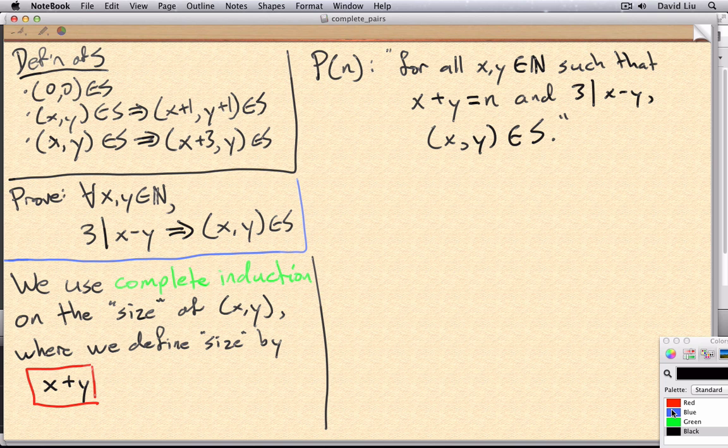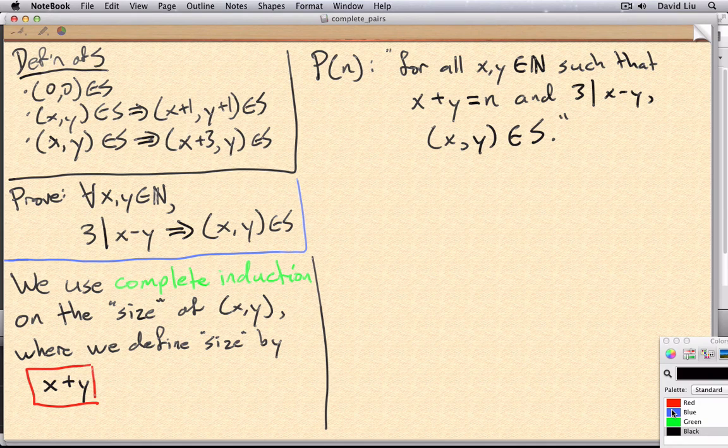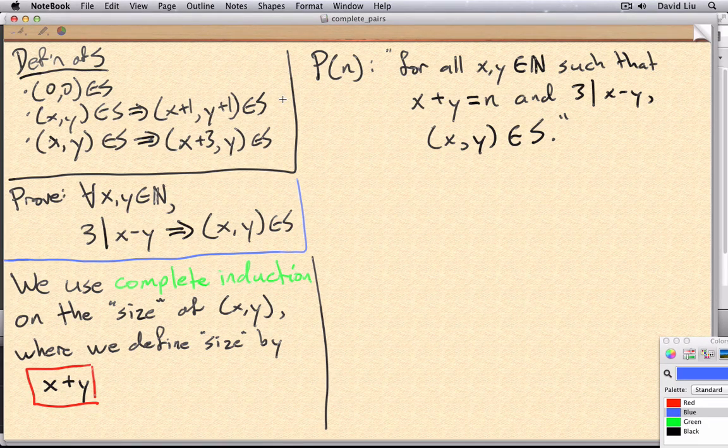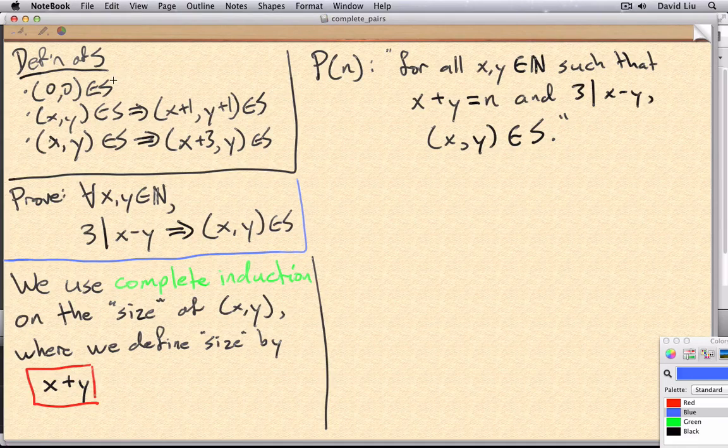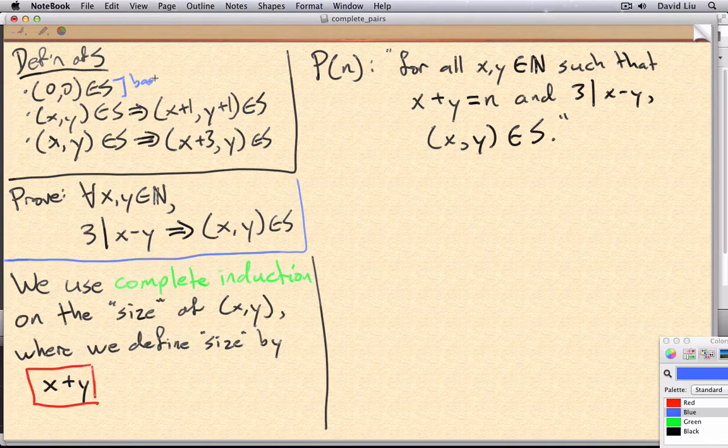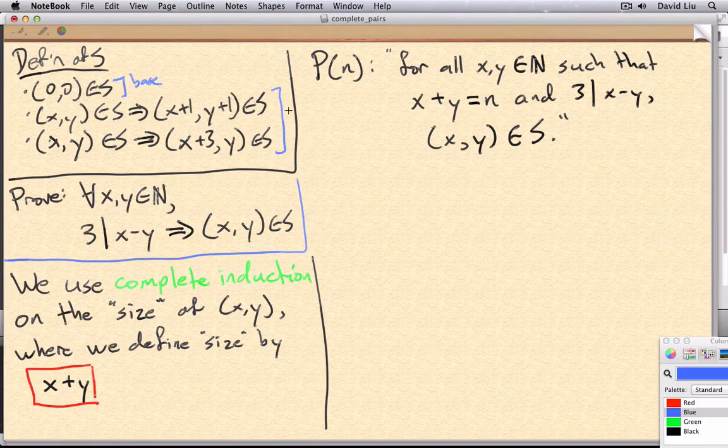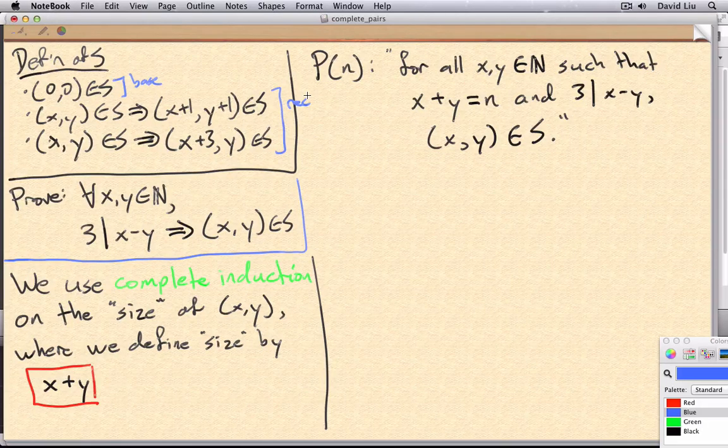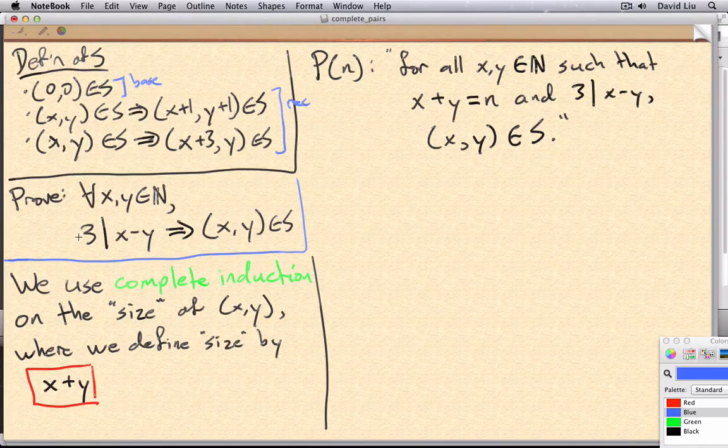Okay, hello everyone. This video is a continuation of the example we saw at the end of week two. Before we finish off the proof, let me remind you of where we stood. We had this recursive definition of a set S with one base rule and two recursive rules, and we came up with the following characterization.